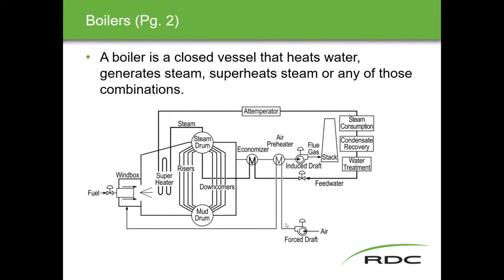The forced draft fan blows air through a preheater into the wind box where it gets mixed with fuel, pressurizing and heating the risers and downcomers in the boiler. Not all furnaces have both fans — some have one or the other — but larger ones will have both. The key thing to understand about the forced draft fan is that when it blows air into the wind box it's also pressurizing the inside of the boiler housing.